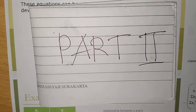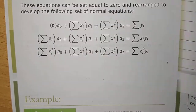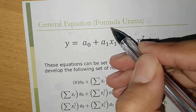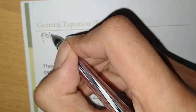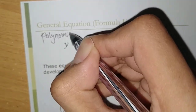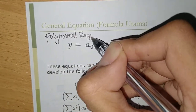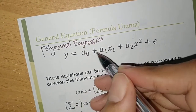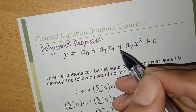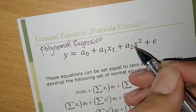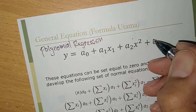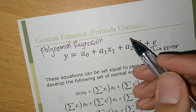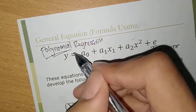Now we are going to continue our discussion for the second part. This is the general equation of polynomial regression: Y equals A0 plus A1·X1 plus A2·X to the power of 2 plus E, where E is the error term. This is the polynomial regression equation.